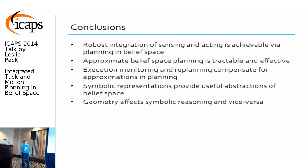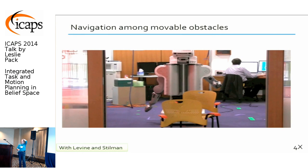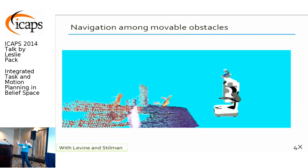We think we can get robust integration between sensing and acting by planning in belief space. We have to do our planning very approximately, but we hope to make up for that by doing a closed-loop approach. Here's another example of the robot trying to get out of a room — basically the same code doing this as the previous task, so it's reasonably general-purpose reasoning about moving things around and doing stuff in the world.